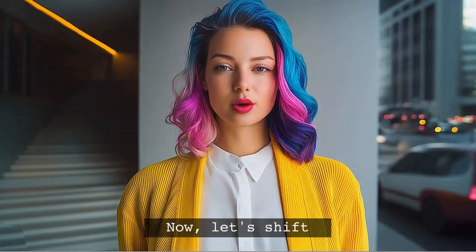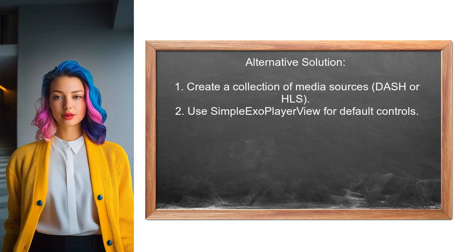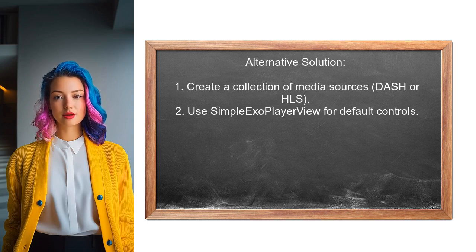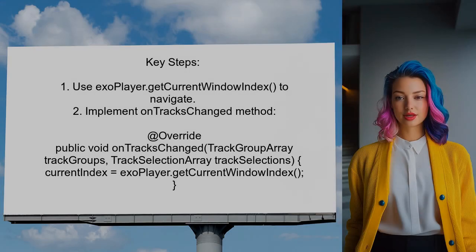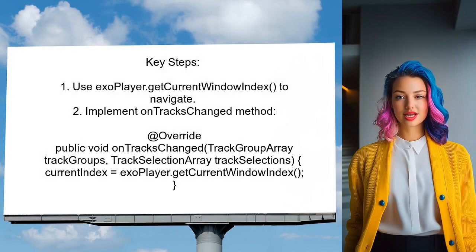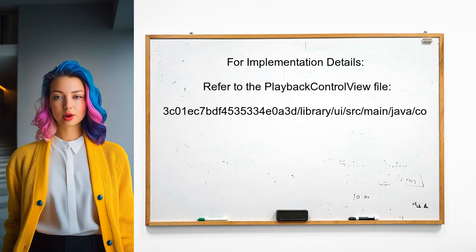Another response suggests an approach where you first create a collection of media sources, such as Dash or HLS. They recommend using the SimpleExoPlayerView component, which includes default controls for previous and next actions. To manage media sources, you can use the ExoPlayer.getCurrentWindowIndex method to navigate back and forth, and track the current index by implementing the OnTracksChanged method. For further implementation details, refer to the PlaybackControlView file in the ExoPlayer GitHub repository.